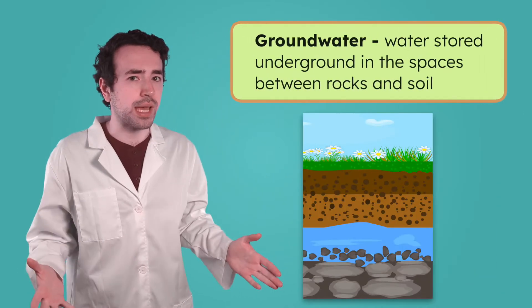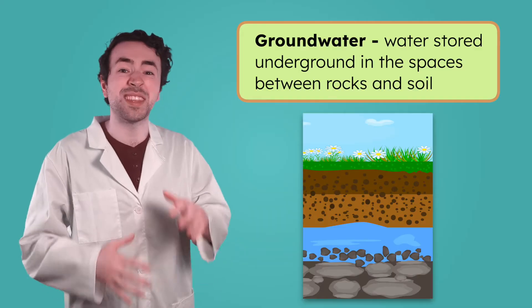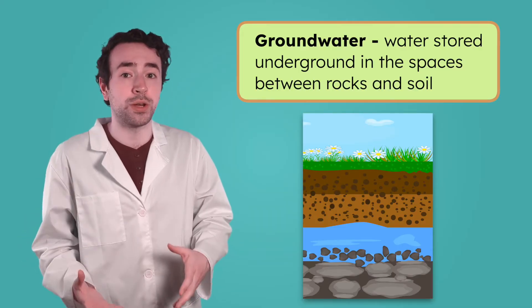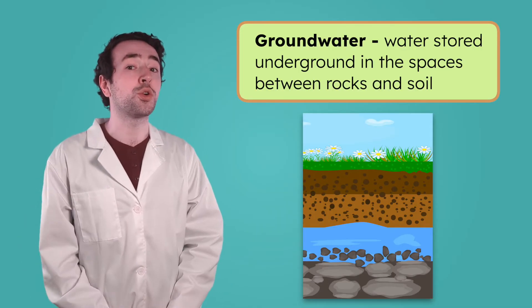But lakes and rivers aren't the only places we find water on earth. Some of it is actually hidden underground. Even though we can't see it, water is stored beneath the earth's surface in the spaces between rocks and soil. This is called ground water. So, most of the earth is covered in water. It's in oceans, lakes, rivers, and even underground. But is all that water the same?